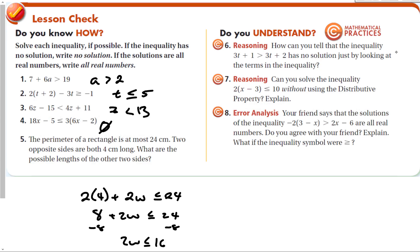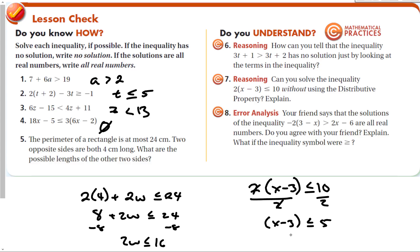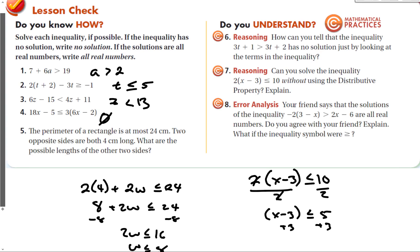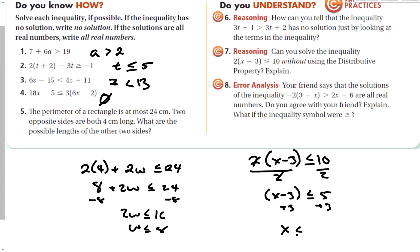How can you tell that an inequality has no solution just by looking at it? If it says greater than and you have the same set of variables on both sides, the variables will cancel and you check whether the remaining constant statement is true — for example, 1 is not greater than 2, so no solution. Can you solve the inequality 2(x minus 3) ≤ 10 without using the distributive property? If the other side is divisible by 2, you can divide out the 2 first, giving x minus 3 ≤ 5, then add 3 to get x ≤ 8.